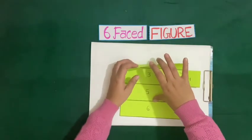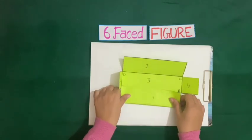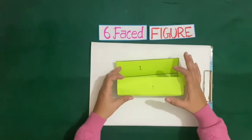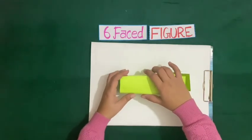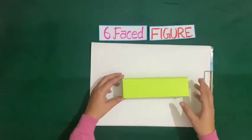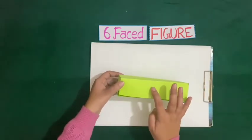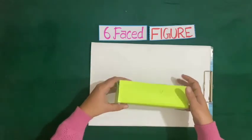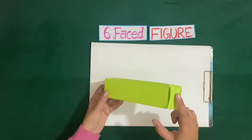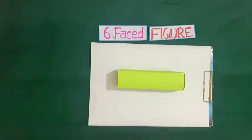Now let us join this. Now we have got a cuboid. Now let us count the faces of this cuboid: one, two, three, four, five and six. So this is a six-faced figure called cuboid.